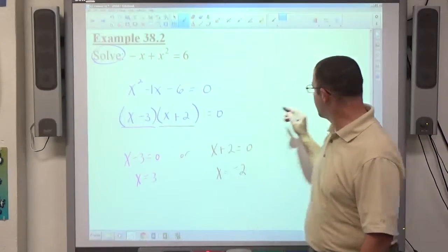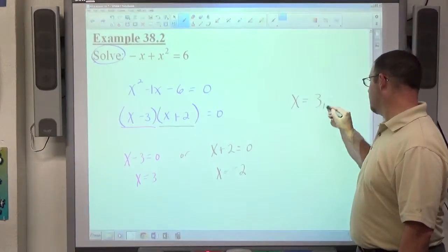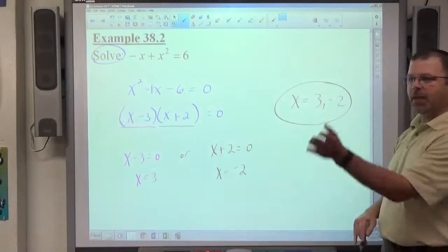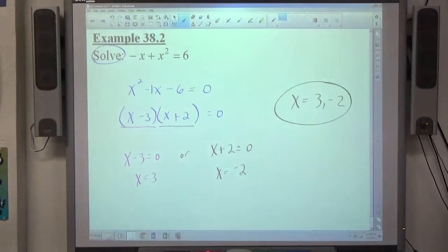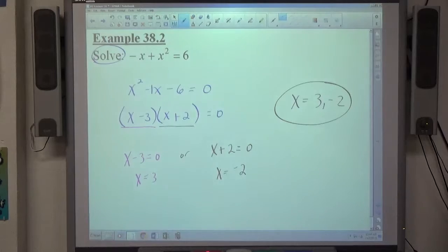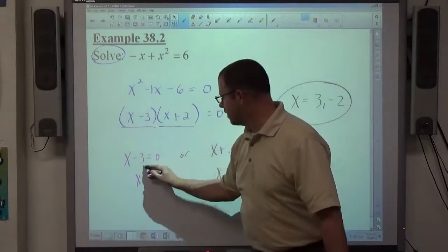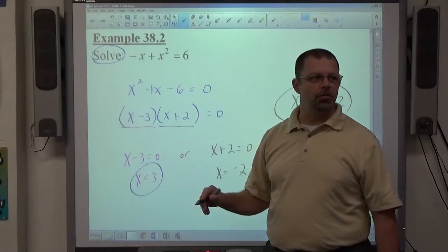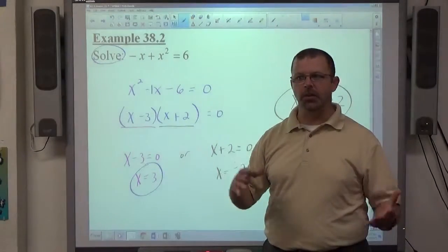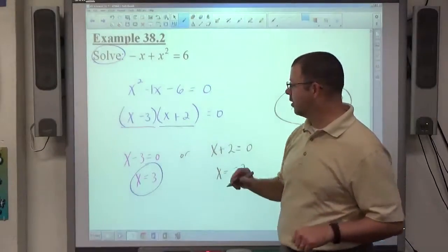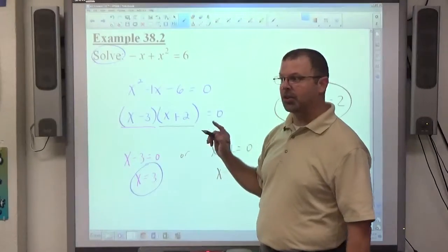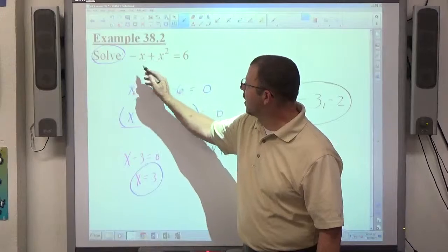Verification, if you want a verification on this, you write x equals 3 comma negative 2, there's my solution, there's my answer. But if you really want to make sure it's right, all you have to do is go back to the original problem, substitute the numbers in, and you should get true statements. If I try 3 first, which is not a required step, if you feel comfortable with the technique and you feel you've done everything right, more power to you. But, if you aren't 100% certain, stick 3 back in for x and see what happens.